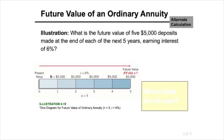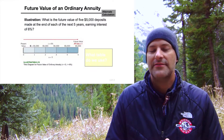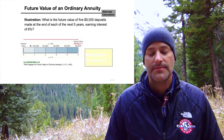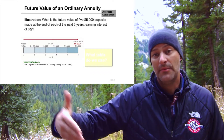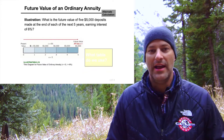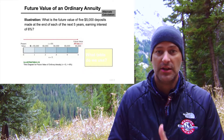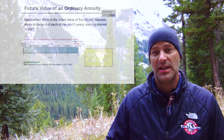Quick illustration: figure out the future value of five-thousand-dollar deposits made at the end of each of the next five years. Say I want to save for a new car, so I'm going to save five thousand dollars every year for the next five years — how much can I expect to have at the end of that five years, assuming a six percent interest rate? That's a five-thousand-dollar ordinary annuity for five years at six percent, and we want to calculate the future value.